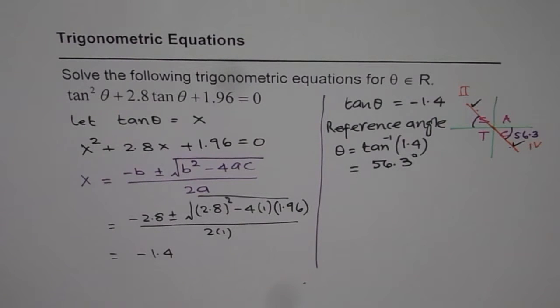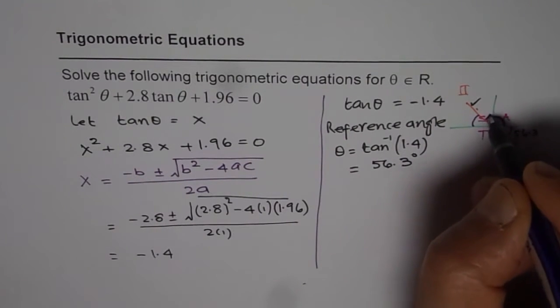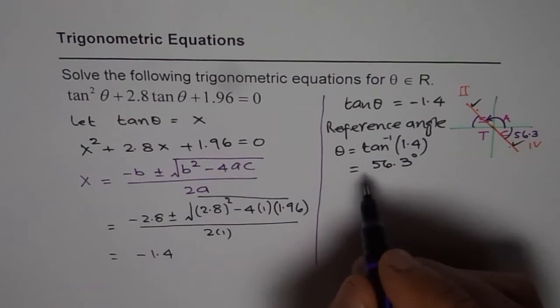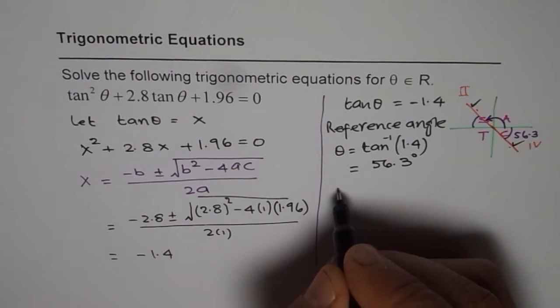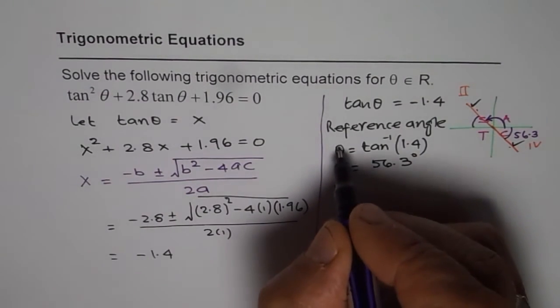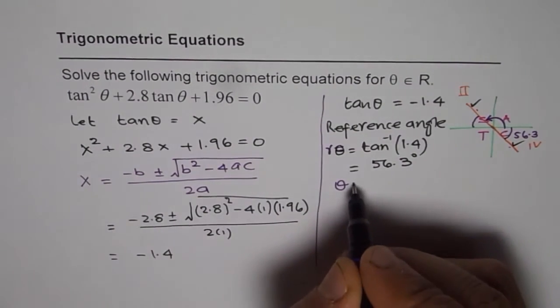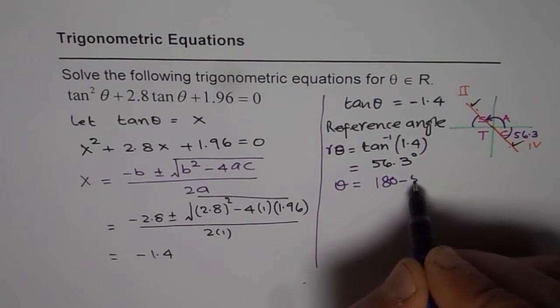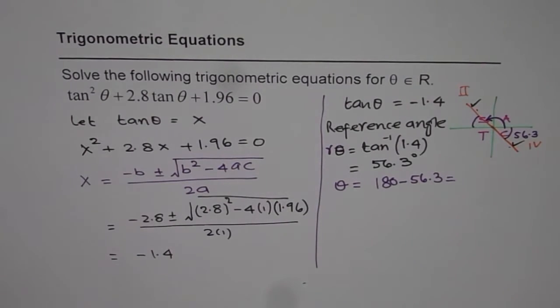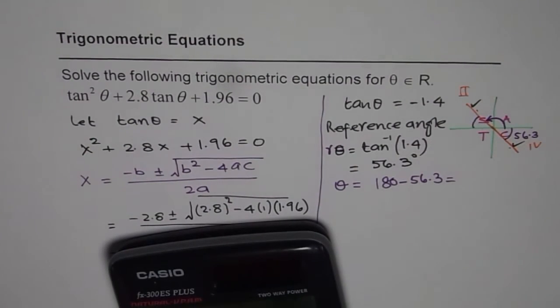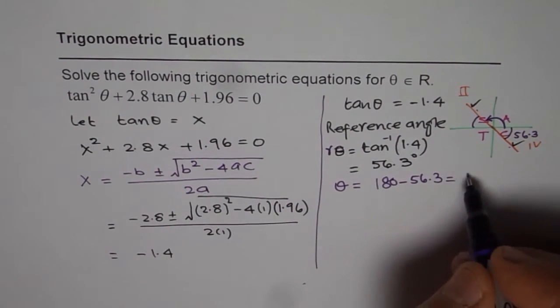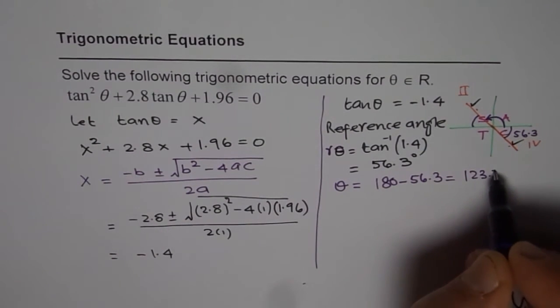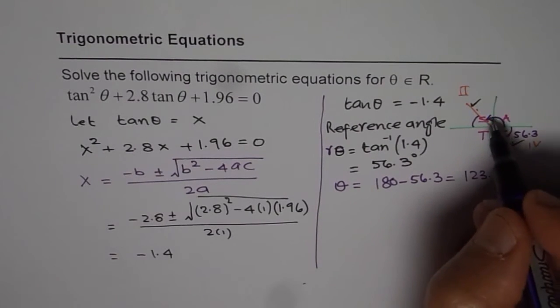So what is the answer? What is the principal angle? So the principal angle is how much? Let's write down theta. Actually I should write some other angle. Reference angle let me call this as R. So theta is 180 minus 56.3. So we can again use the calculator and use 180 minus 56.3 equals to 123.7 degrees. So that is the angle.